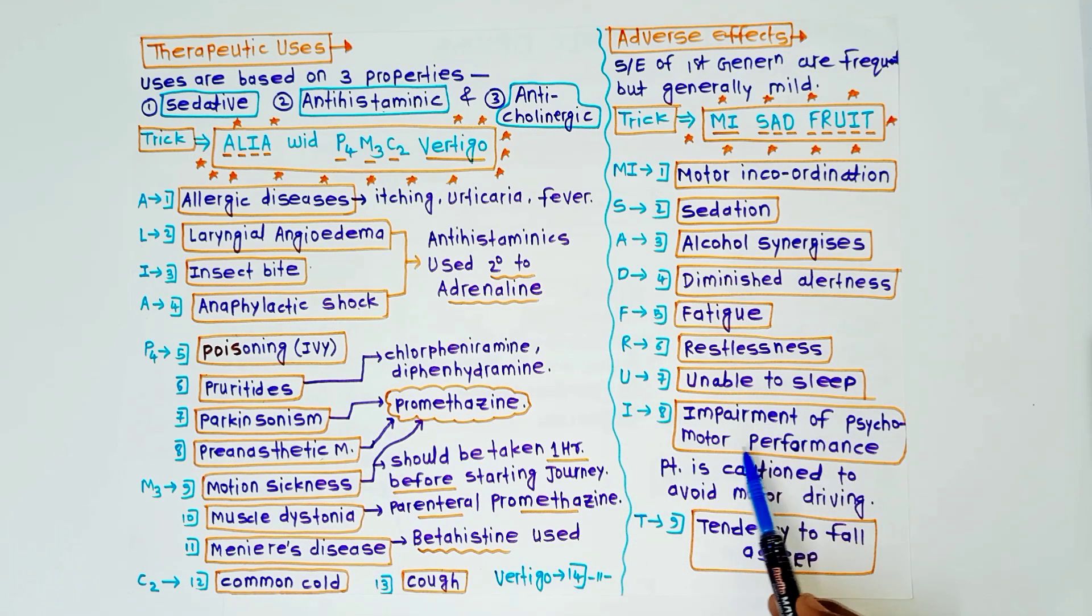I for impairment of psychomotor performance. This is the most important adverse effect. In this case patient is cautioned to avoid motor driving. And last use is T for tendency to fall asleep.